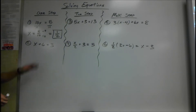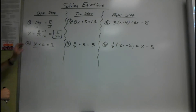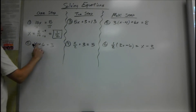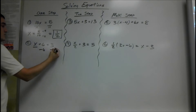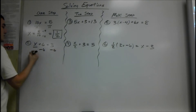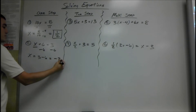Next one, even easier. If we're solving for x and we're adding 6, we have to get rid of the 6 because we're solving for x — we've got to get x by itself. Since this is adding, we do the opposite and subtract 6 from both sides. So we get x equals 3 minus 6, which is negative 3.